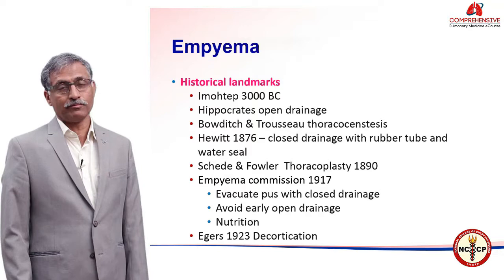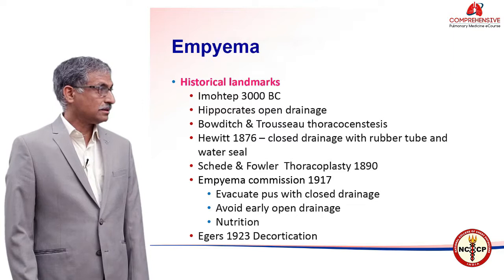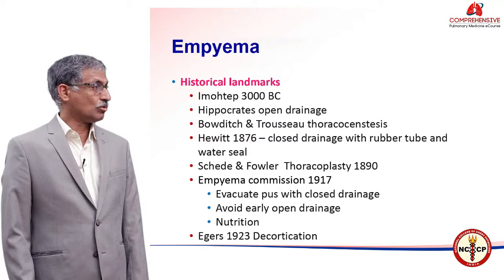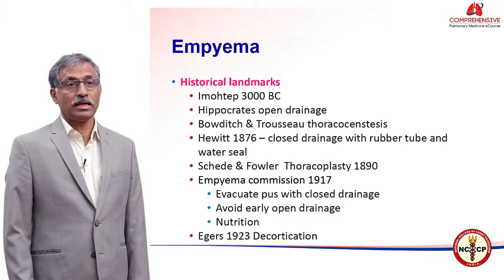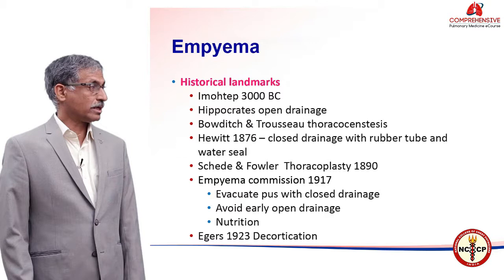The mortality of empyema was in the region of 30 to 40%. They advised that the pus needs to be evacuated with closed drainage, avoid early open drainage, and improve the nutrition of the patient. With these principles, the mortality came down to less than 10%. In 1923, Egers described decortication.